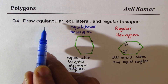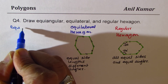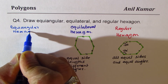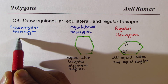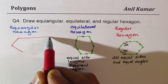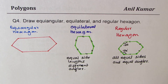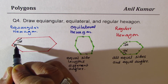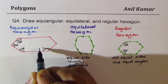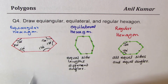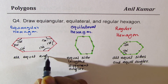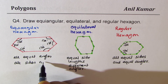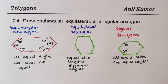The last one is to sketch an equiangular hexagon. Since we want equal angles, we stretch the hexagon horizontally. We make a hexagon where one side is far longer than the other sides, but we maintain the same angle of 120 degrees at every vertex. That becomes equiangular — all equal angles. That is how we draw equiangular, equilateral, and regular hexagons.